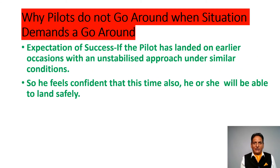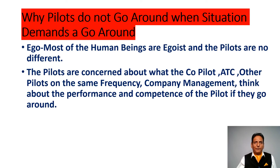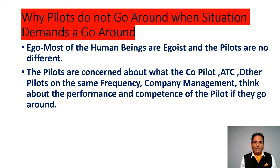Next is expectation of success — if a pilot has landed in similar conditions on earlier occasions, he feels confident that this time also he or she will be able to land safely. Next is ego. Most human beings are egotistical and pilots are no different. Pilots are concerned about what the copilot, ATC, other pilots on the same frequency, and company management will think about the performance and competence of the pilot if they go around.